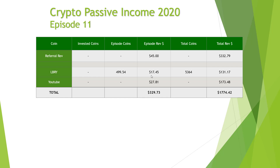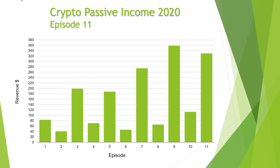Finally, our two advertising accounts: YouTube at $27.81 and Library at $17.45. Grand total this update: $329.73.